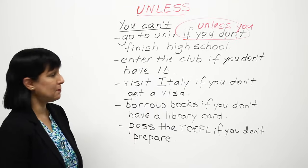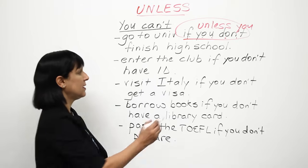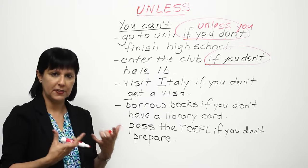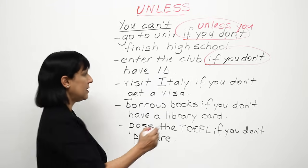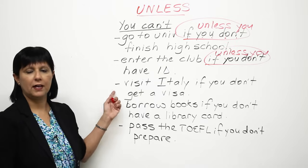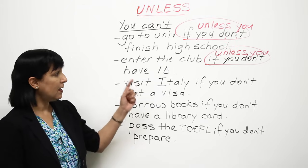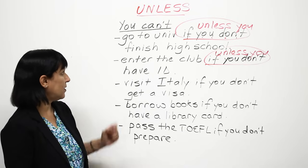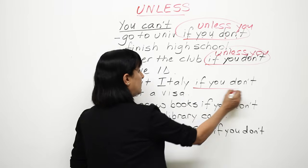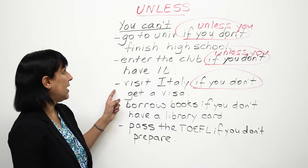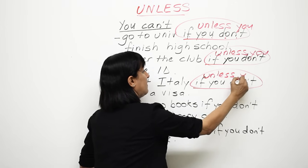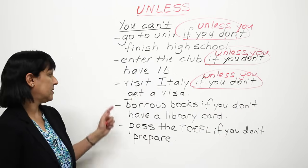Let's look at another example. 'You can't enter the club if you don't have ID.' ID is short for identification. 'You can't enter the club unless you have ID.' Next one: 'You can't visit Italy if you don't get a visa.' We can say, 'You can't visit Italy unless you get a visa.'